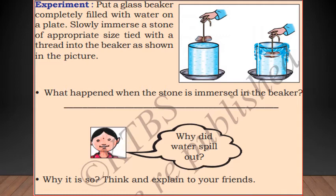Next, on page number 135, there is an experiment: put a glass beaker completely filled with water on a plate, then slowly immerse a stone of approximate size tied with a thread into the beaker, as shown in the picture. What happened? When the stone is immersed in the beaker, the water spills out. Why? Because the container was already full.